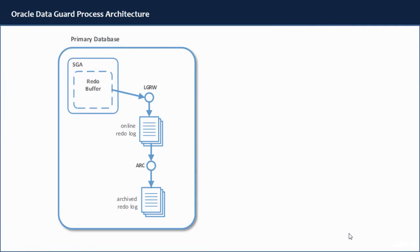This is a typical structure of an Oracle database. You would have an SGA in the memory, and the Log Writer Process running, which reads from the RedLog buffer and saves into online RedLog files. You would also have the archiver process running, reading from the online RedLog and writing into archived RedLog files.